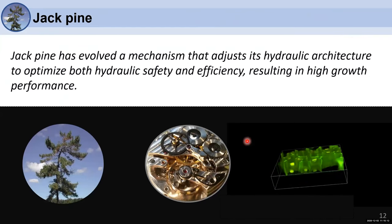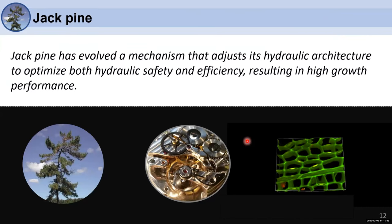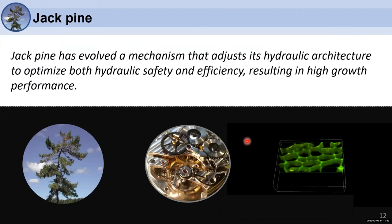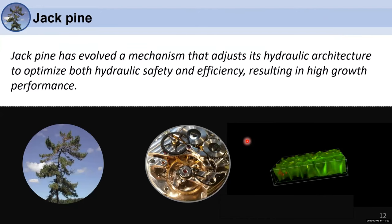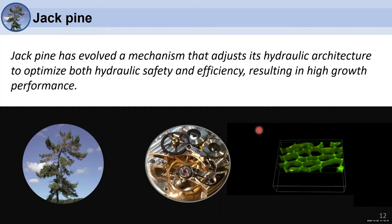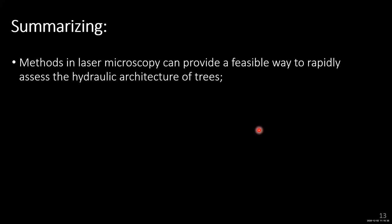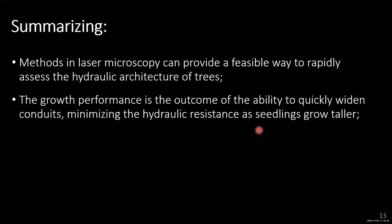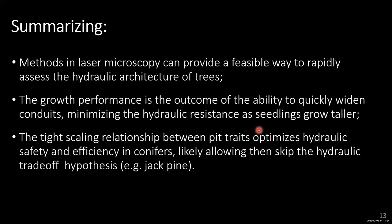In conclusion, Jack Pine has evolved a mechanism that adjusts its hydraulic architecture to optimize both hydraulic safety and efficiency, resulting in high growth performance — effectively bypassing the safety-efficiency trade-off due to its pit structure. Summarizing our findings: laser microscopy provides a feasible way to rapidly assess hydraulic architecture; growth performance results from the ability to quickly widen conduits, minimizing hydraulic resistance as seedlings grow taller; and the tight-scaling relationship between pit traits optimizes hydraulic safety and efficiency in conifers, likely allowing them to skip the hydraulic trade-off hypothesis — with Jack Pine as a prime example.